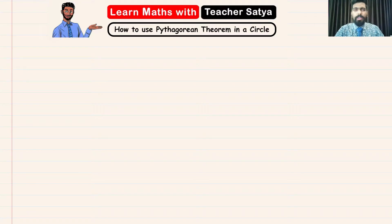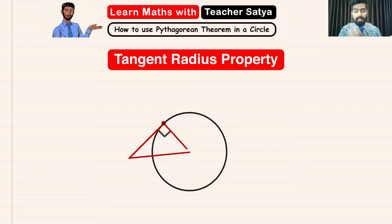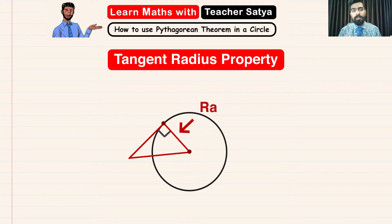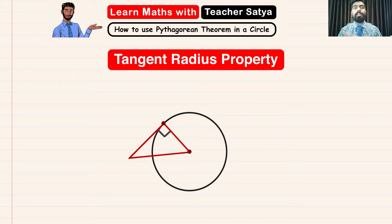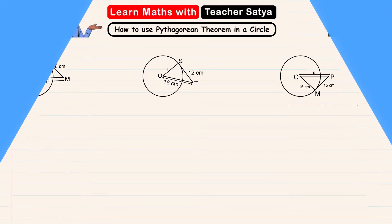The tangent-radius property states that a tangent to a circle is perpendicular to the radius of that circle. This means that the triangle created will be a right angle triangle, and hence we can use the Pythagorean theorem. Now let's take this understanding and solve a few questions.